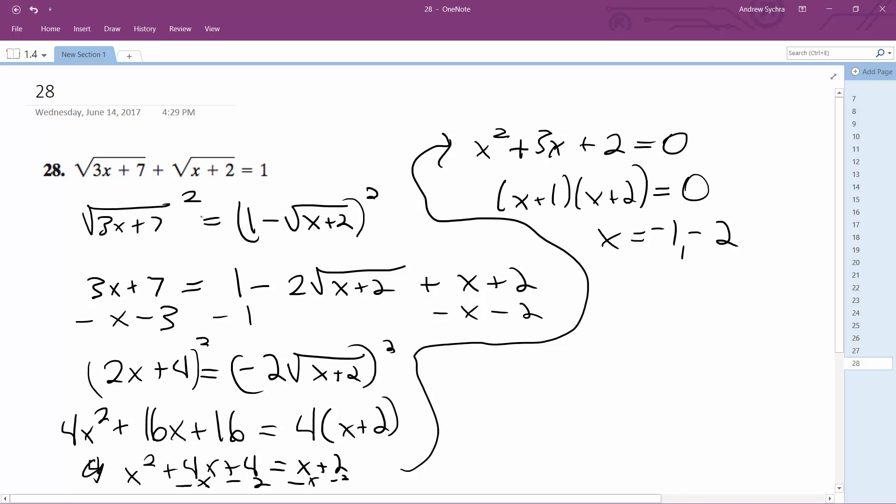So for the first part, negative 1, so negative 3, so that's 4. That ends up being square root of 4 is 2 plus 1. So negative 1 does not work.